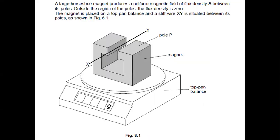In this problem, we have a large horseshoe magnet that produces a uniform magnetic field of flux density B between its poles. Outside the region of the poles, the flux density is zero.